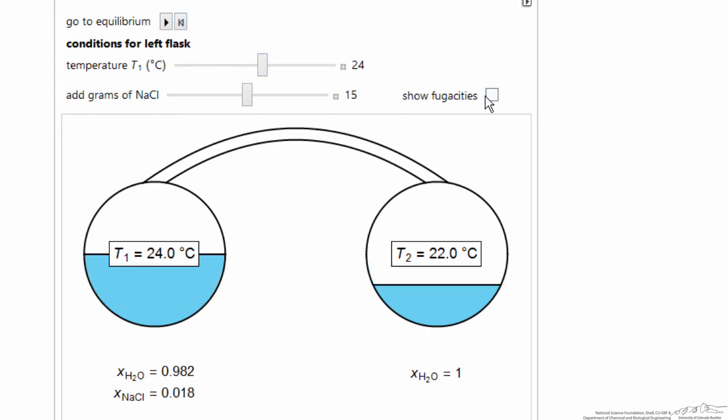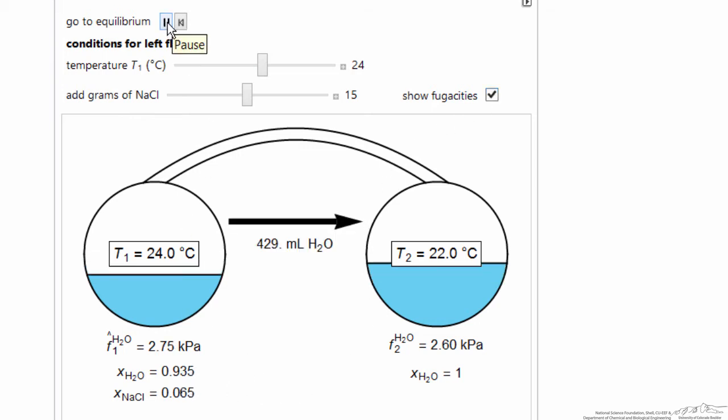So we can reset it, and we can display the fugacities, so the fugacity is higher on the left side, so when I hit play, the fugacity of water changes because we're decreasing the mole fraction of water on the left, and therefore decreasing its fugacity by moving some water to the right.